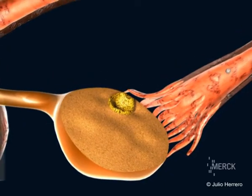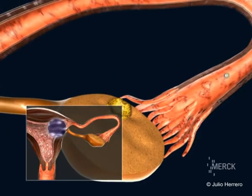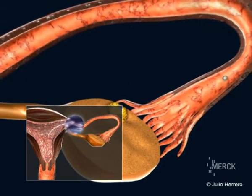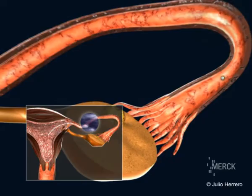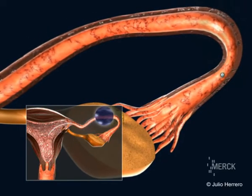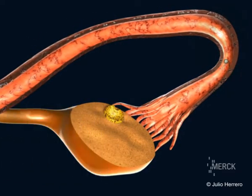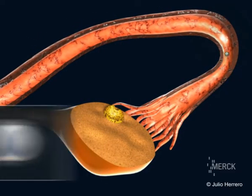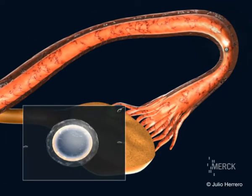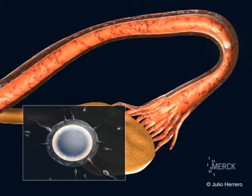If sexual intercourse occurs, the semen deposited in the vagina starts its ascension into the tube, and the sperm eventually arrive at the oocyte. One of these will succeed in penetrating into the interior of the oocyte.